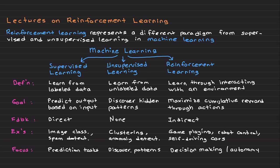On the other hand, in unsupervised learning, the algorithm is provided with unlabeled data and the goal is to discover hidden patterns or structures in the data. Common tasks include clustering — grouping similar data points together. In unsupervised learning there is no notion of rewards or specific tasks; the focus is on understanding the data structure without explicit feedback.